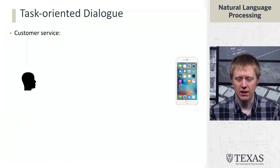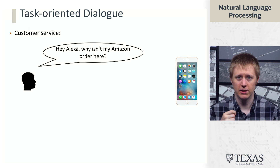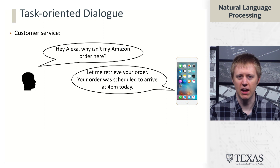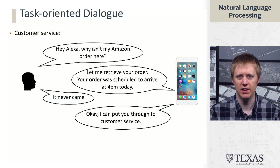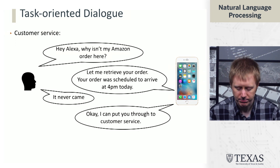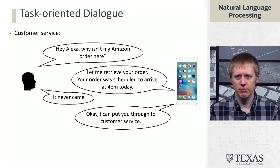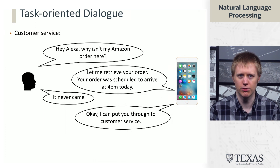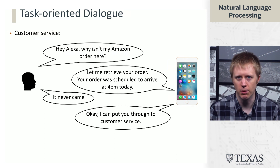Another domain that often gets talked about is customer service. If you want to talk to Amazon and ask why your order is not here, ideally you'd do this through Alexa and it would say 'your order was scheduled to arrive at 4 p.m.,' and then you say 'it never came' and it tries to figure things out. The big difference here is that we actually need a model of what the user is trying to do. We need to back this up with real data, real databases — information about what the user's order was — rather than just generating random output from a language model. Plumbing all this together requires a lot of different ideas beyond what we saw in chatbots.